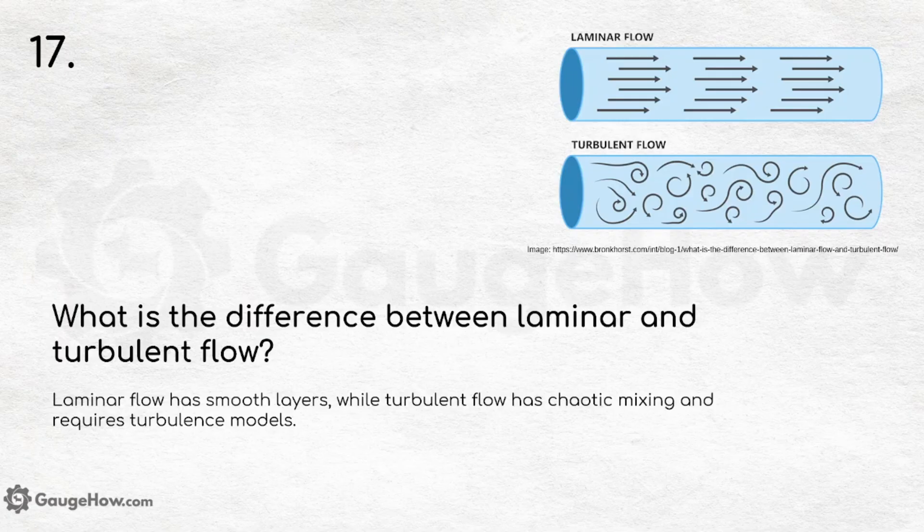What is the difference between laminar and turbulent flow? There is another video on this topic covering Reynolds number in more detail. The key difference is that laminar flow has smooth layers while turbulent flow has chaotic mixing and requires turbulence models.